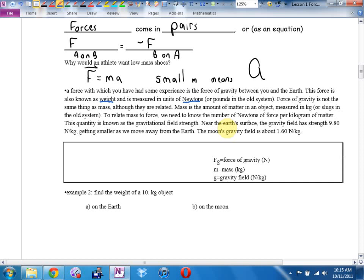So, as I was saying, force of gravity is also called weight. Force of gravity is not the same thing as mass, although they are related. Mass is the amount of matter in an object, which we measure in kilograms. Or on the imperial system, it was measured in slugs, believe it or not. To relate mass to force, we need to know the number of newtons of force per kilogram of matter. This quantity is known as gravitational field strength.